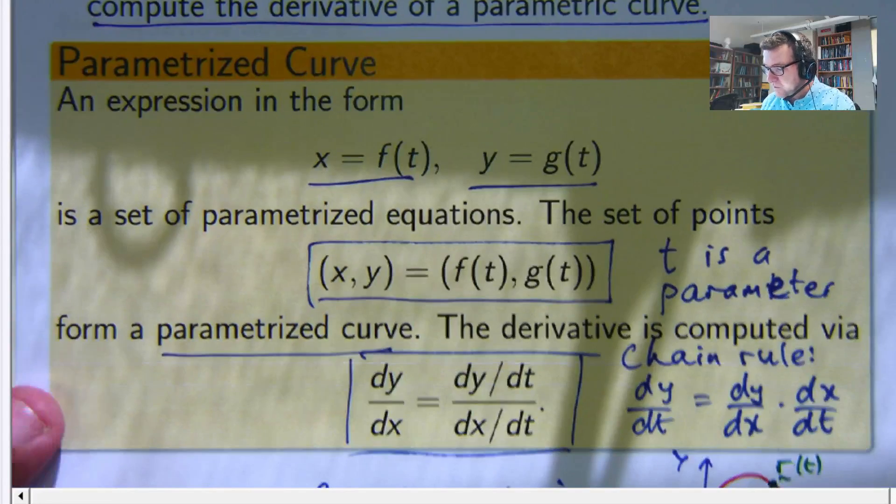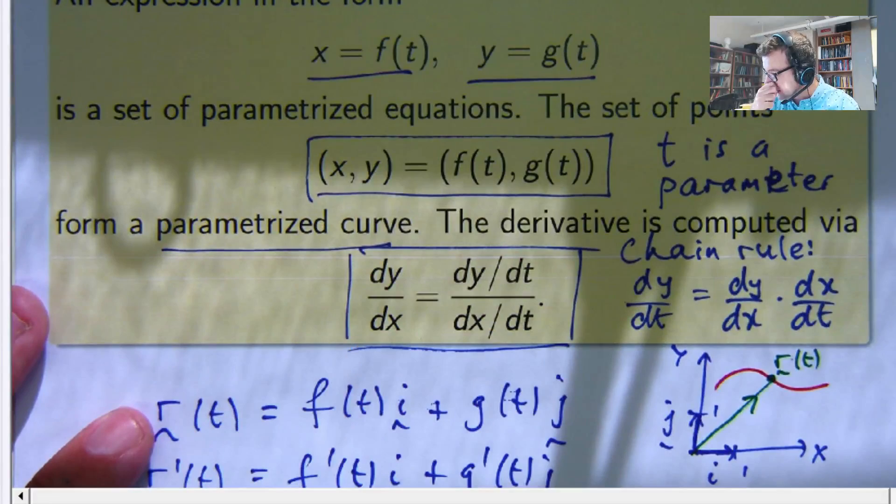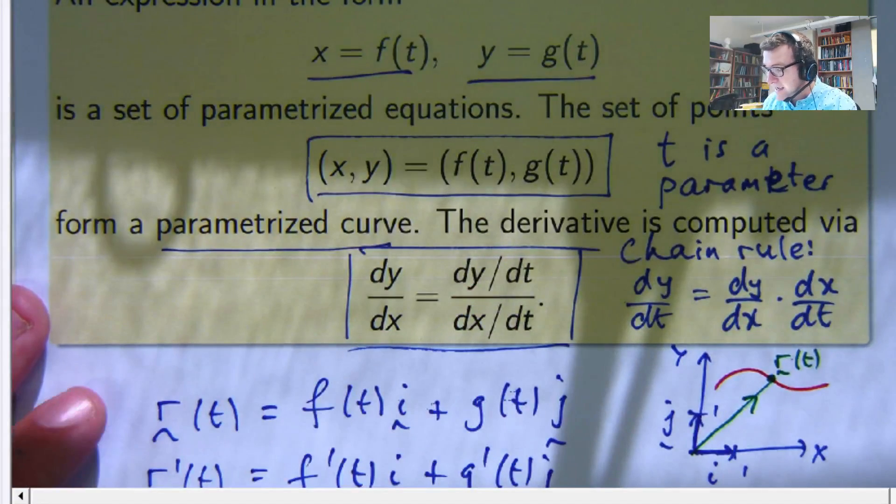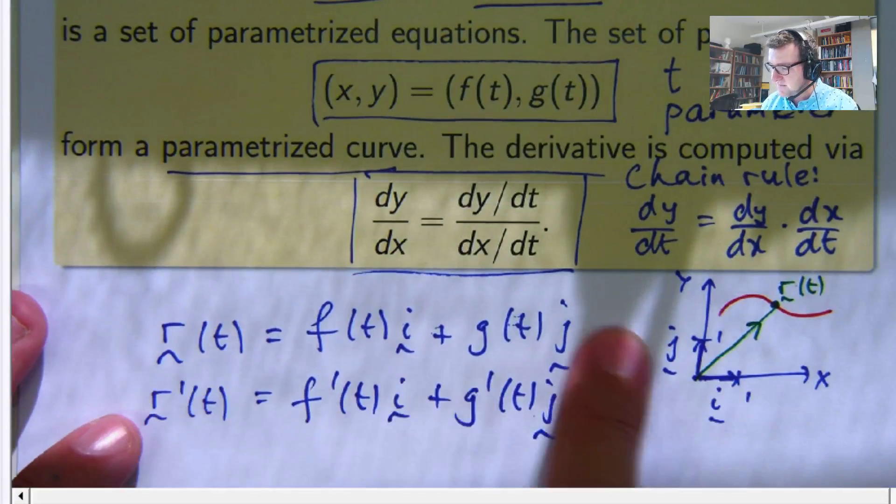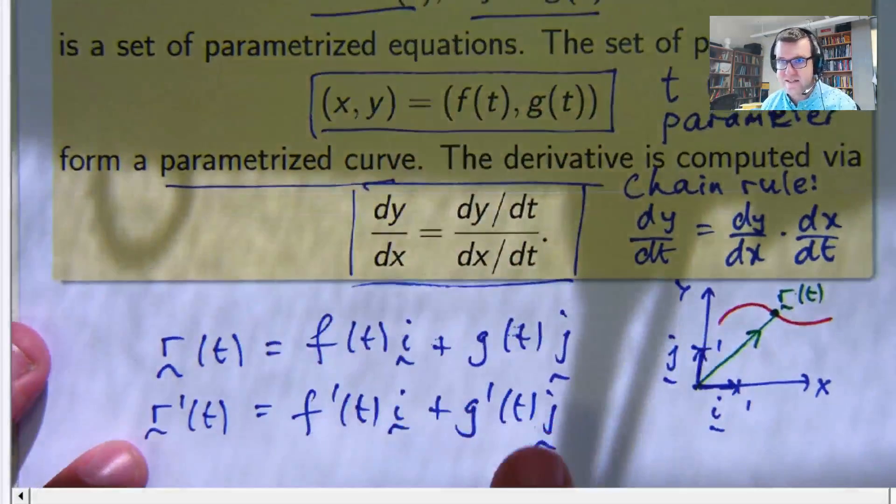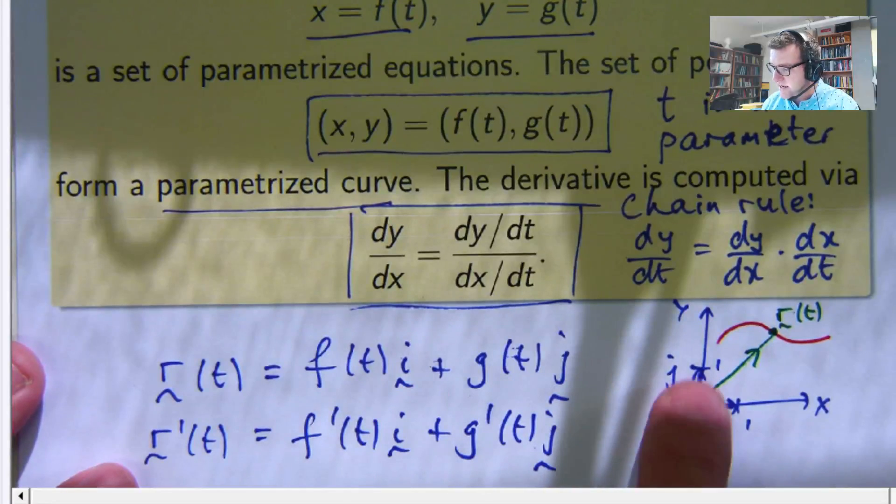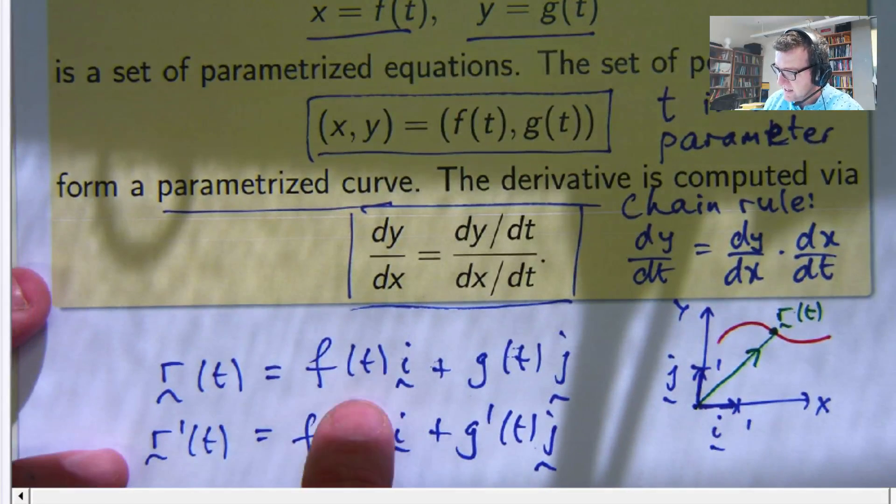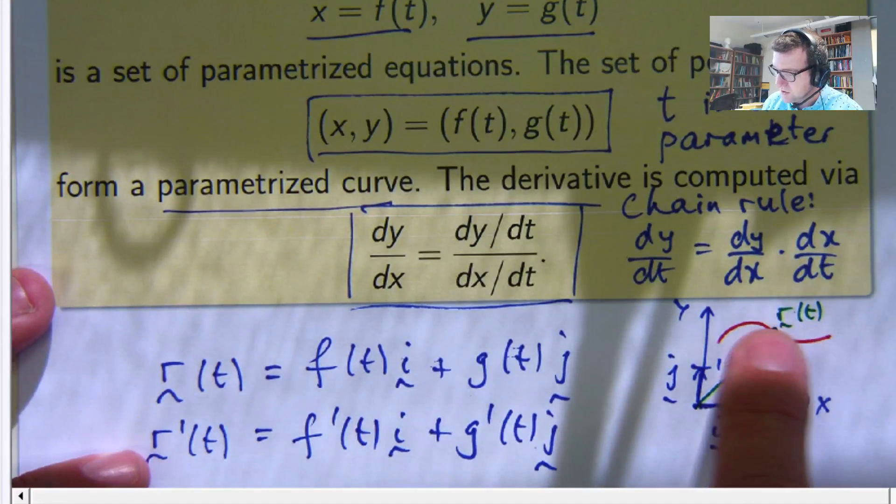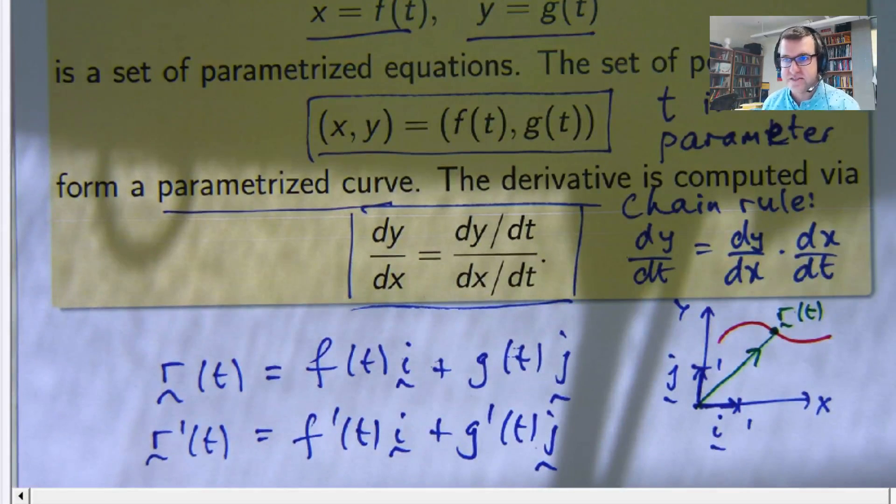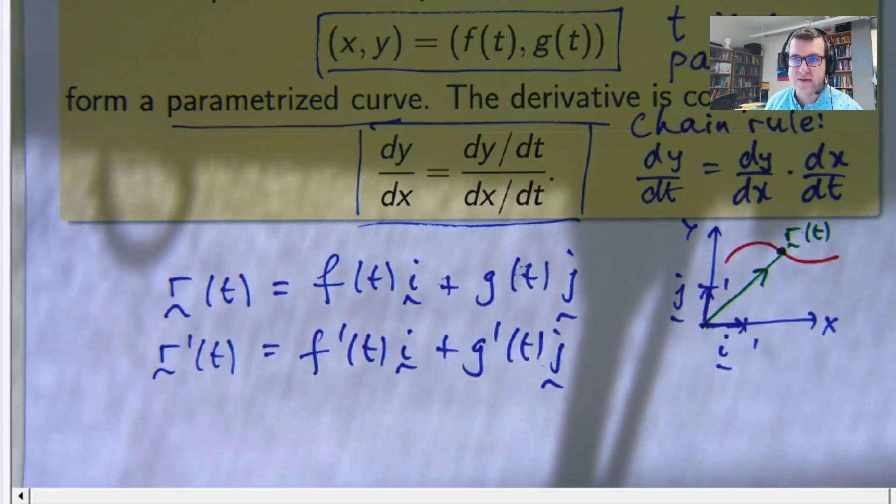We worked out how to compute the derivative dy/dx by using the chain rule. I also introduced the idea of considering these things as vectors in the plane, so this is a vector function where you have your little i and j basis functions. The vector takes you from the origin to any point on the curve as you vary t. To differentiate that, you just differentiate the component functions and you get a vector.